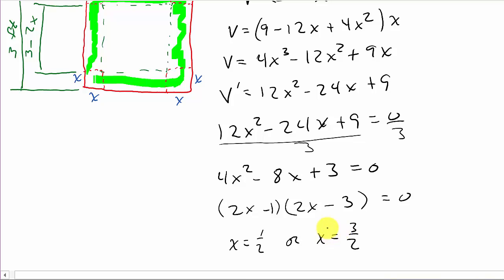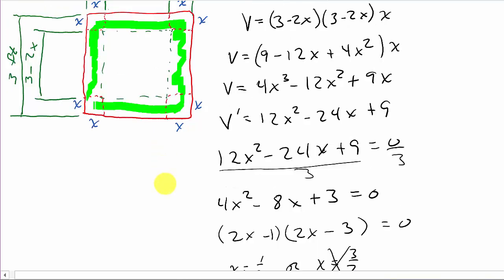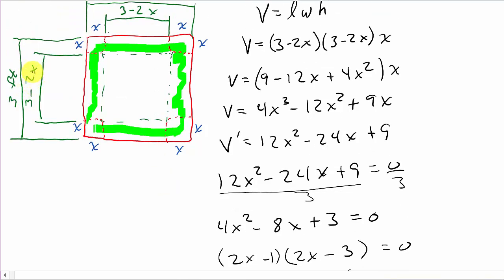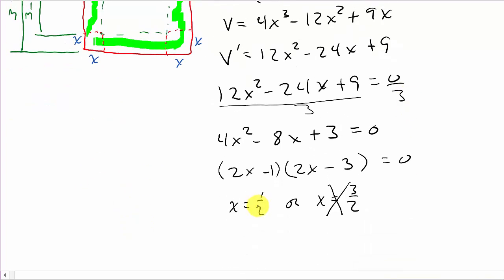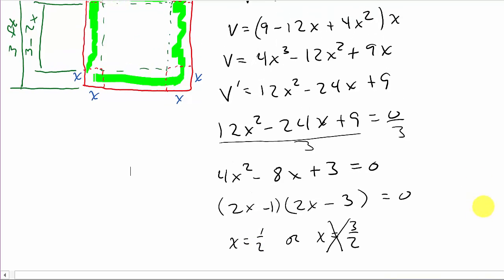So I mean, right off, I know this is not going to be an answer. Because if I take 3 halves and plug it into here, 2 times 3 halves, look at this: 3 minus 2 times 3 halves. Well that's going to leave me with 3 minus 3, and I know the side can't be 0. So I'll get x equal 1 half. So if you look at this, we can actually draw our number line. And you can see it'll maximize x equal 0 and x equal 1.